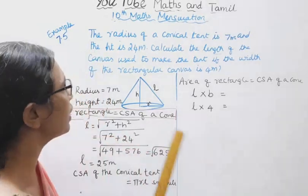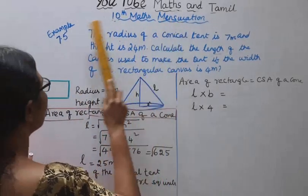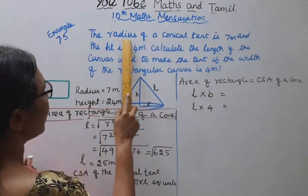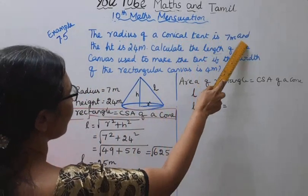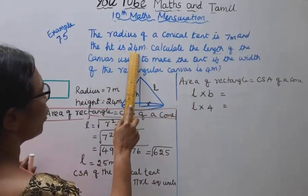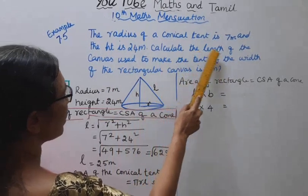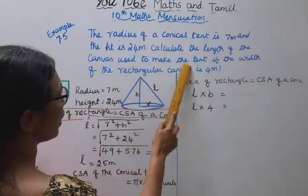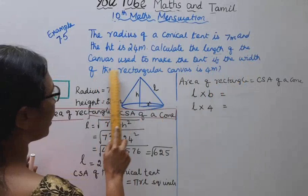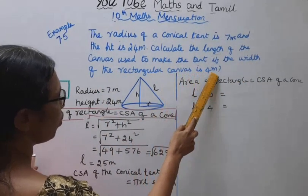Hello students, welcome to Maths and Tamil channel. 10th class Maths mensuration, example 7.5. The radius of a conical tent is 7 meters and the height is 24 meters. Calculate the length of the canvas used to make the tent if the width of the rectangular canvas is 4 meters.